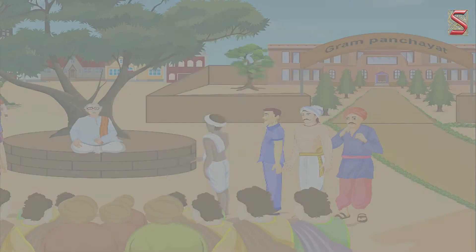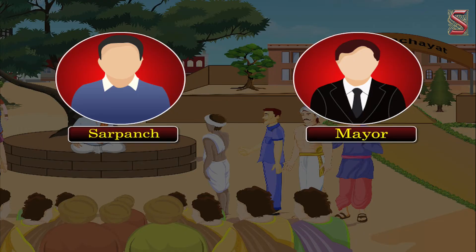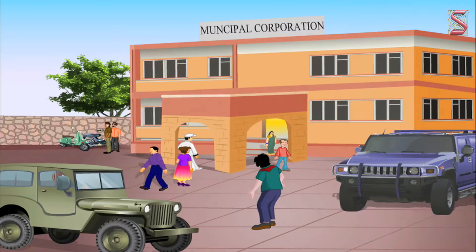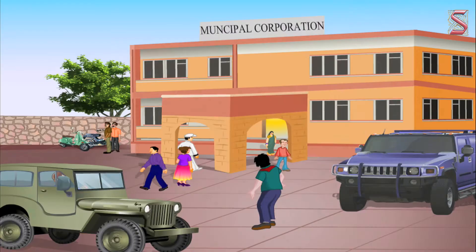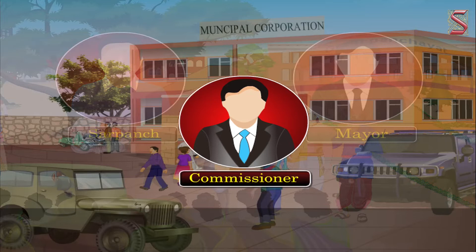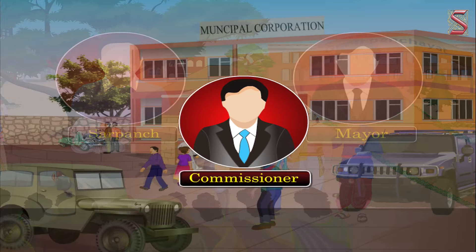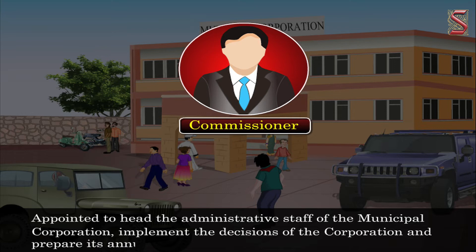Elections are held once in five years. Just like the sarpanchas in village panchayats, in urban local governing bodies we have a Mayor who functions as the head of the municipality. A Municipal Commissioner, who is an IAS officer, is appointed to head the administrative staff of the municipal corporation, implement the decisions of the corporation, and prepare its annual budget.